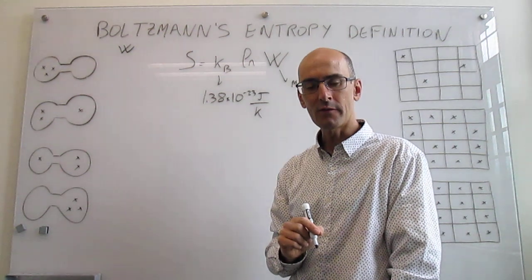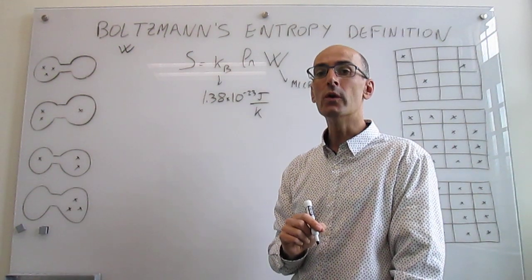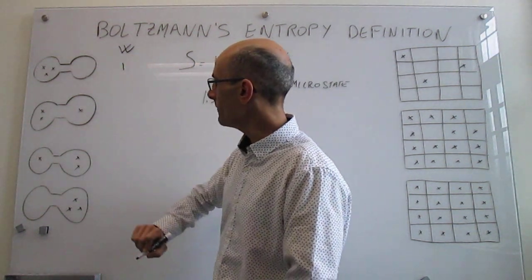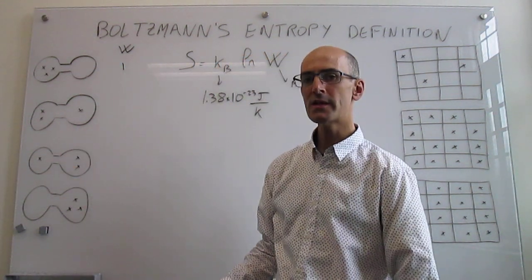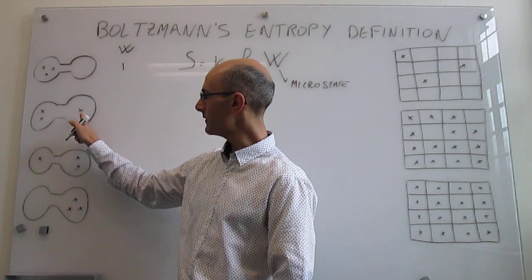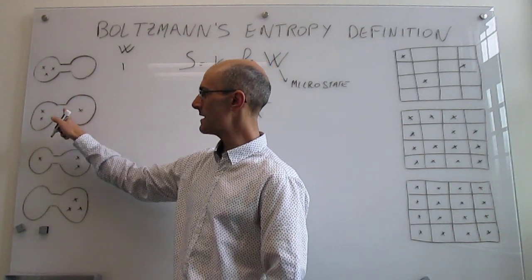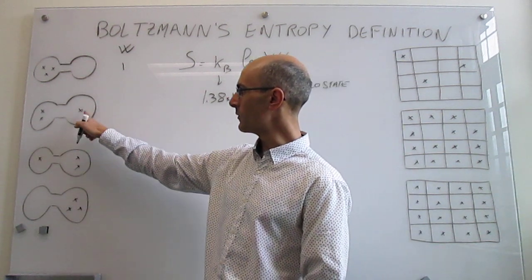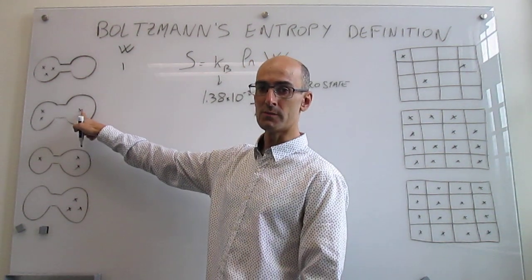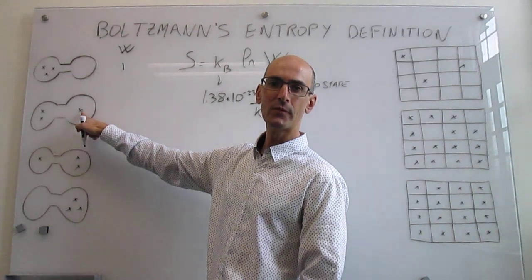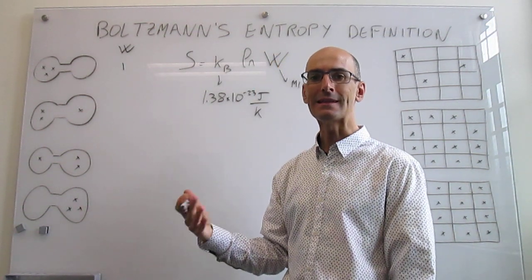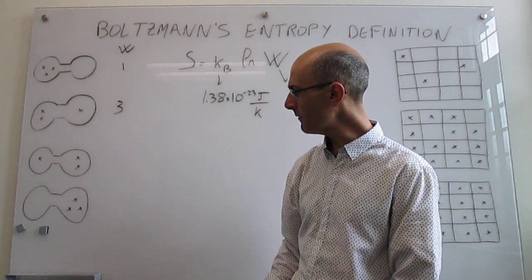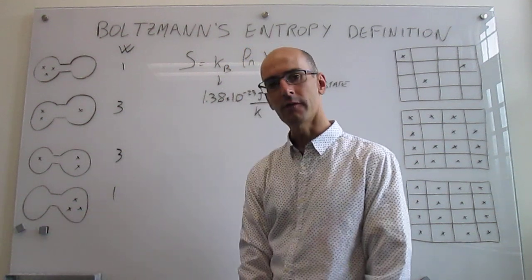When all three particles are in the left compartment, there is only one way that can be true — so W = 1. For the arrangement with two particles in the left and one in the right, if the particles are labeled A, B, C, there are three different microstates: A is alone on the right, B is alone, or C is alone. Those are three different microstates that lead to the same macrostate, so W = 3. Similarly, for one particle in the left and two in the right, W = 3, and for all three on the right, W = 1.